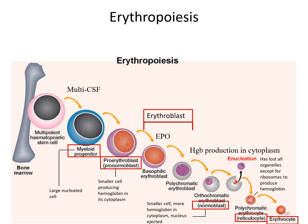After enucleation, you have a polychromatic erythrocyte, also known as a reticulocyte, which has lost all its organelles except some ribosomes that continue producing hemoglobin. Essentially, when you reach a mature erythrocyte, you have nothing more than a plasma membrane bag full of hemoglobin. In the process from stem cell to erythrocyte, you first build hemoglobin, then lose the nucleus, then lose organelles — ribosomes are lost last because they are needed to make the protein hemoglobin. Eventually the remaining organelles degenerate and you have a mature erythrocyte.